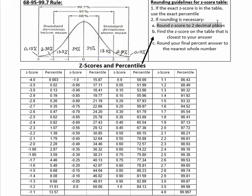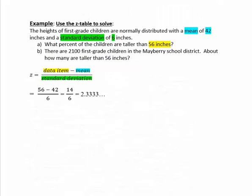And when we need to round, we'll round the z-score to two decimal places. So rounding 2.33333 to two decimal places gives us 2.33.